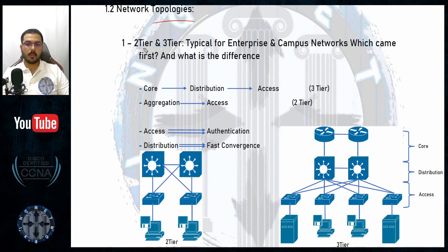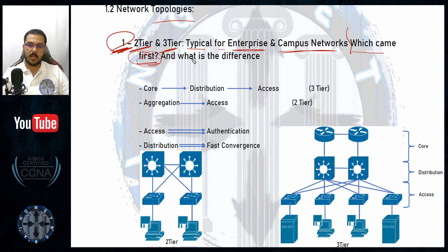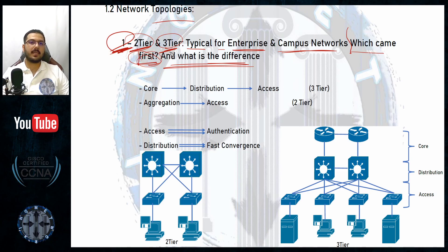The two most famous and important designs are called the two-tier and the three-tier designs. These are typical for enterprise and campus networks. Let me start with the three-tier because it delivers the clearest idea. The two-tier is a collapsed version — smaller, simpler, fewer components. But first, let's understand three-tier.